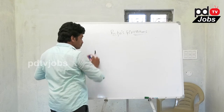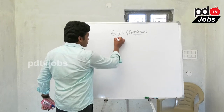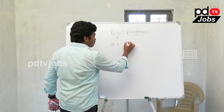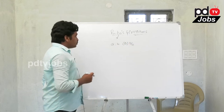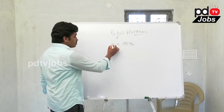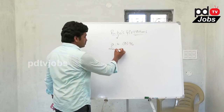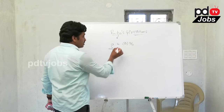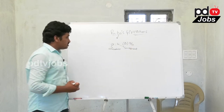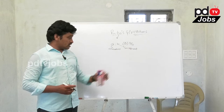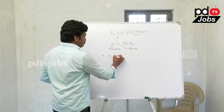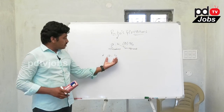Ratio is denoted as A is to B, or A by B. In this notation, A is called the antecedent and B is called the consequent.